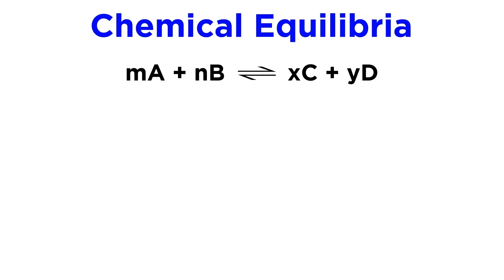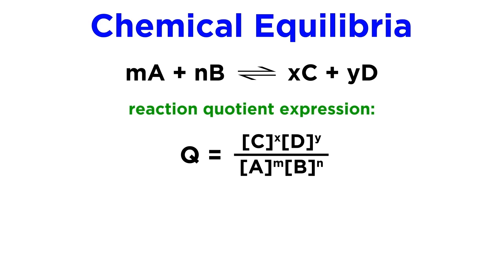Given this general equation for a chemical equilibrium, we can write something called the reaction quotient expression, symbolized by Q. Q will be equal to the concentrations of the products, each raised to the power of their stoichiometric coefficients, over the concentrations of the reactants, each raised to the power of their stoichiometric coefficients.